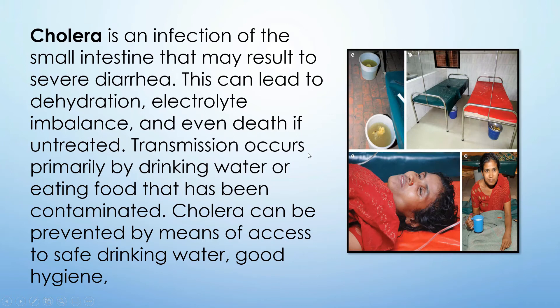Cholera is an infection of the small intestine that may result in severe diarrhea. This can lead to dehydration, electrolyte imbalance, and even death if untreated. Transmission occurs primarily by drinking water or eating food that has been contaminated. Cholera can be prevented by means of access to safe drinking water and food hygiene.